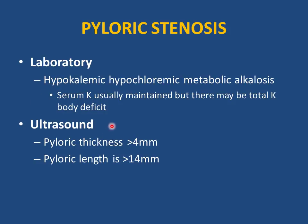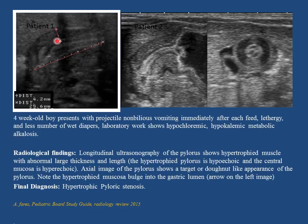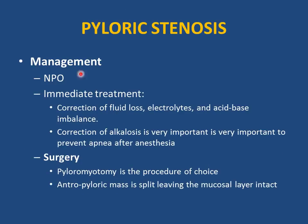Ultrasound is the study of choice for pyloric stenosis. Diagnostic criteria: pyloric thickness >4 mm and pyloric length >14 mm. Example case: a 4-week-old boy with projectile non-bilious vomiting immediately after each feed, lethargy, decreased wet diapers, and hypokalemic metabolic alkalosis. Ultrasound showed pyloric length of 25.6 mm (>14 mm) and thickness of 4.2 mm (>4 mm) — confirming pyloric stenosis.